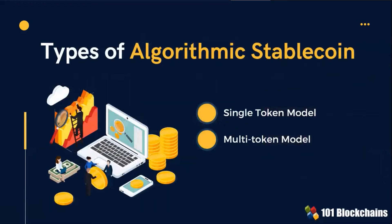There are two types of algorithmic stablecoins: the single-token model and the multi-token model.